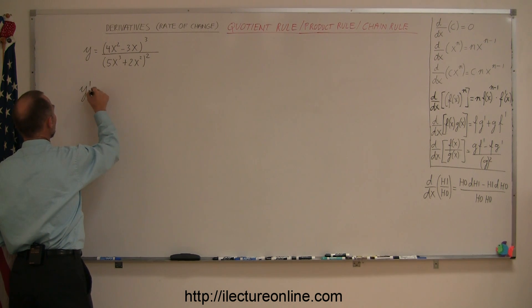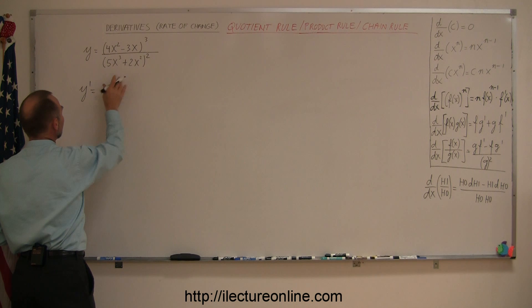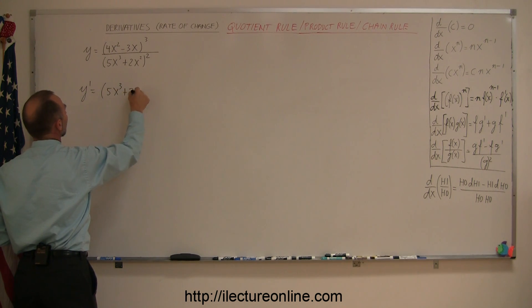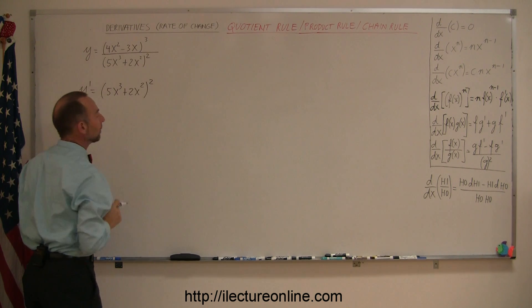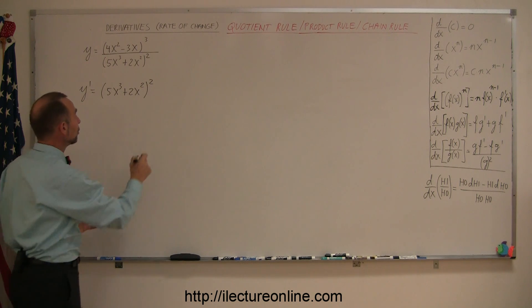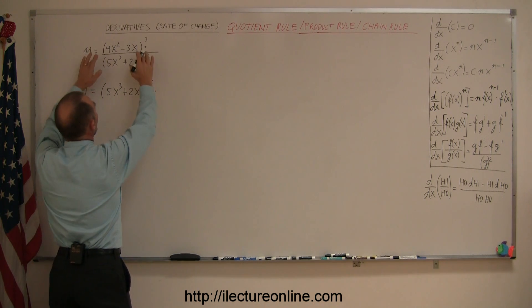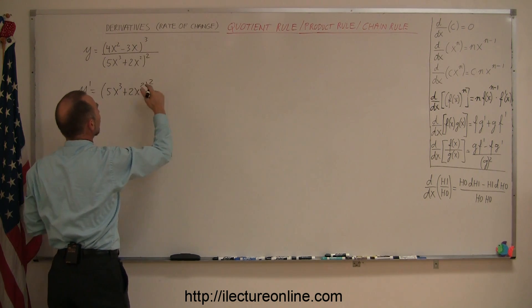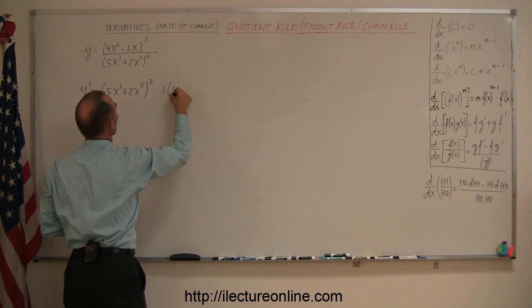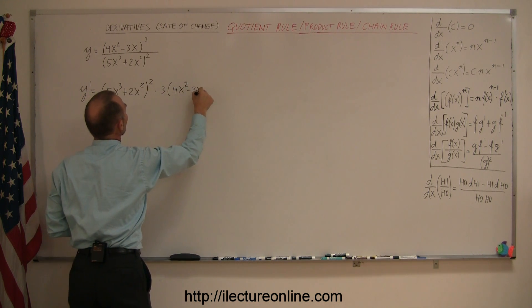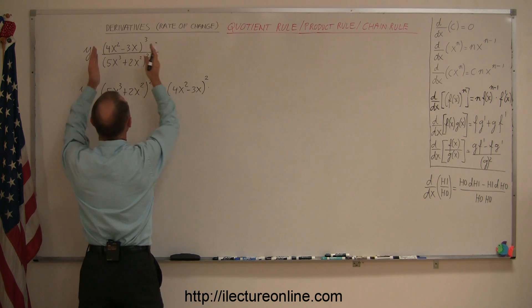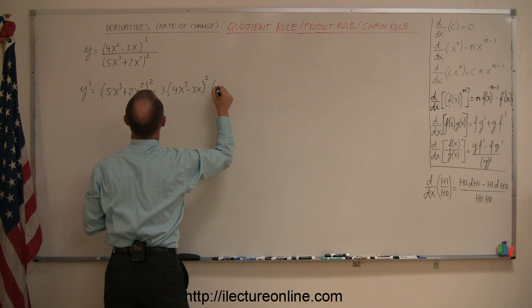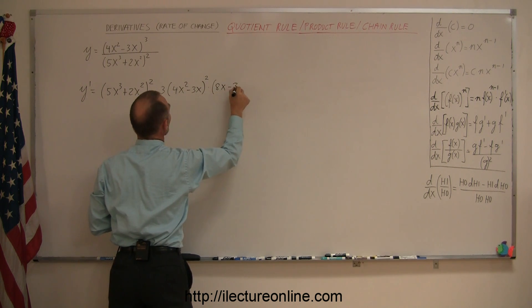So y prime is equal to: take the denominator, which is 5x cubed plus 2x squared raised to the second power, so we simply copy the denominator down, times the derivative of the numerator. The numerator has an exponent, so we use the chain rule — we write 3 times 4x squared minus 3x to the 2nd power, times the derivative of what's inside, so times 8x minus 3.